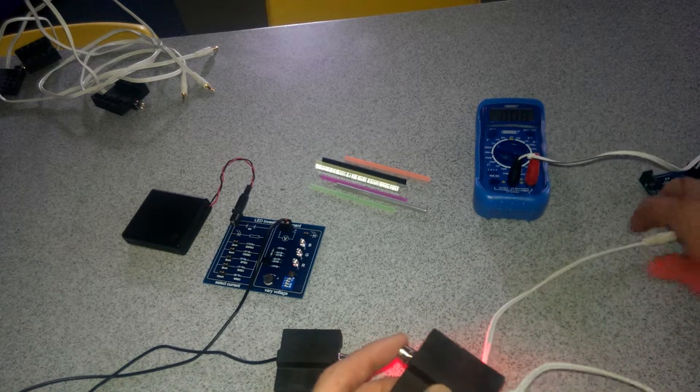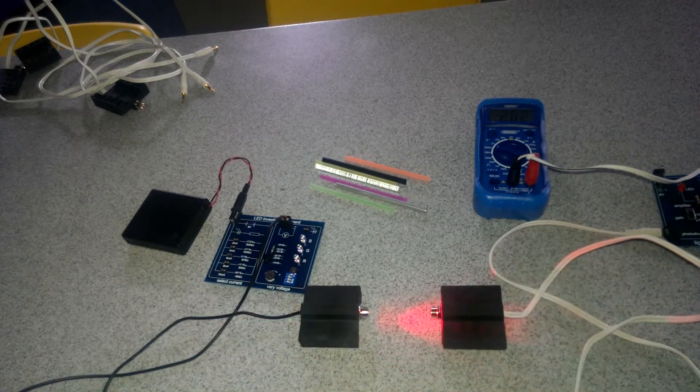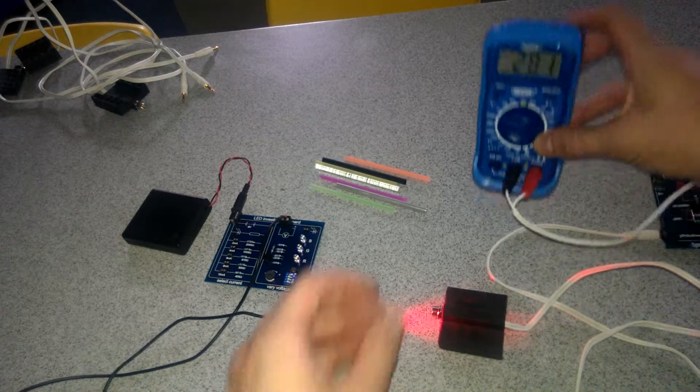So we now have our two things set up. We have an emitter and we have a receiver and we have some way of working out how much light is being received.